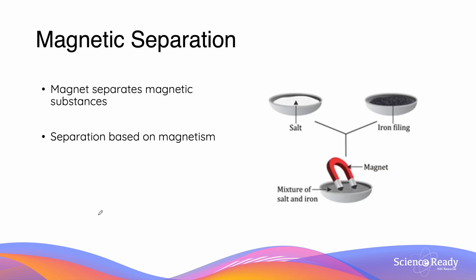The next technique that we'll look at is magnetic separation. This one is quite self-explanatory - we use a magnet to separate a substance which is magnetic from one that is non-magnetic. The example here, given on the right hand side, is a mixture of salt and iron. Since salt is not magnetic, using a magnet will allow us to remove the iron filings while leaving the salt in place. This separation technique is based on magnetism.